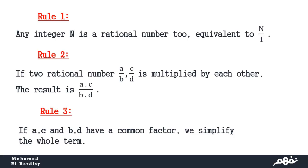And this is rule 1. What about rule 2? Rule 2 says if two rational numbers a over b and c over d are multiplied by each other, what happens? The result is a times c over b times d. Look, we multiplied numerators together and the denominators together.